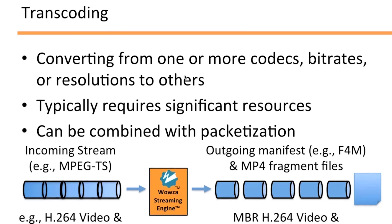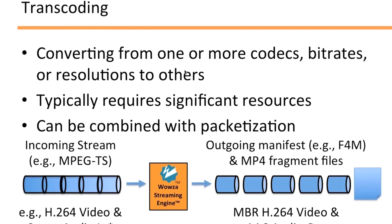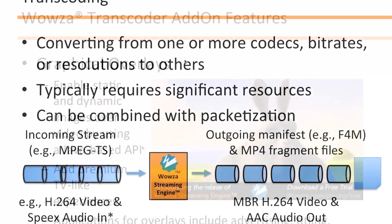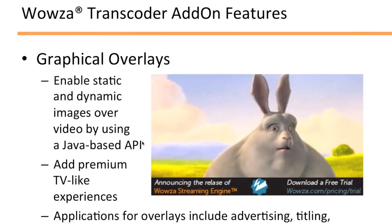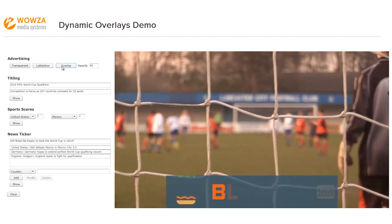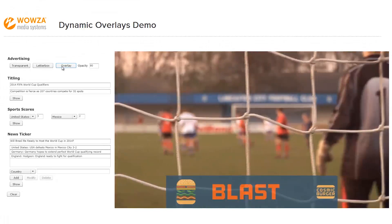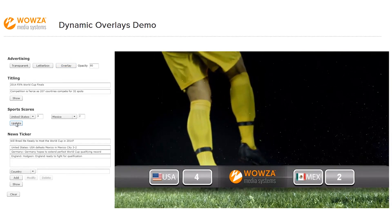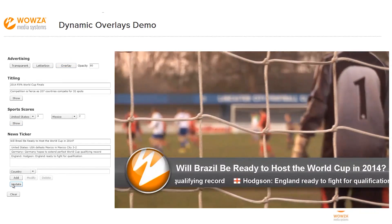Convert from one or more codecs, bitrates, or resolutions to others, and use the add-on to add graphical overlays for advertising, titling, watermarking, company logos, sports or stock tickers, and more.